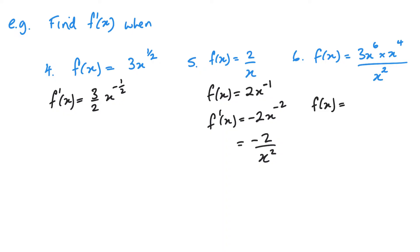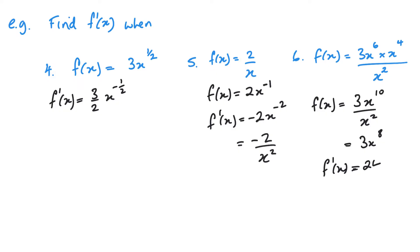With question 6, we need to sort this out first. We've got 3x — when I'm multiplying these, it's the same as adding the powers, and when I'm dividing, it's taking away the powers. So we've got 3x to the power of 8. Differentiating means I multiply by the power, so 3 times 8 is 24, and I take 1 away from my power.